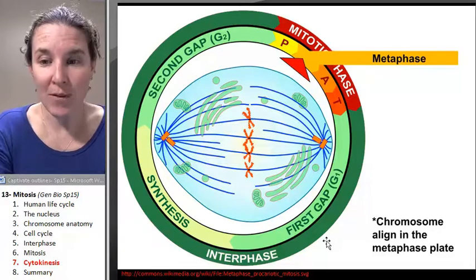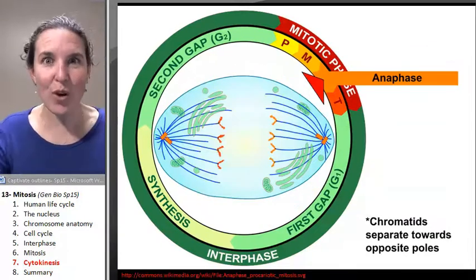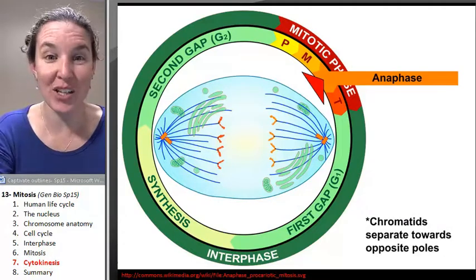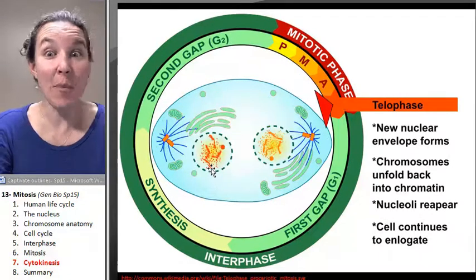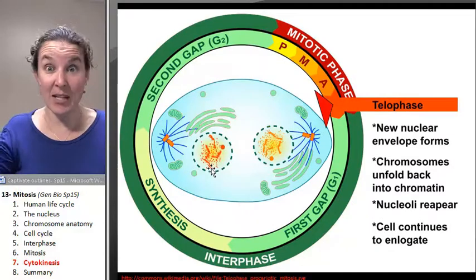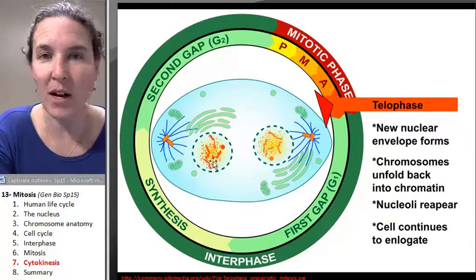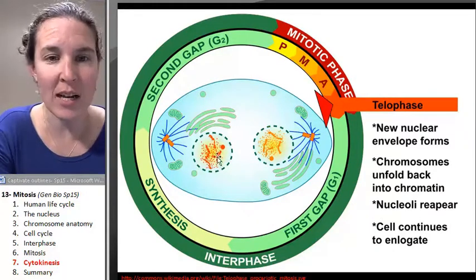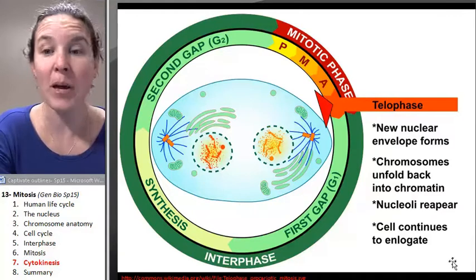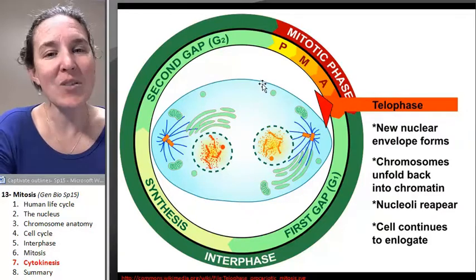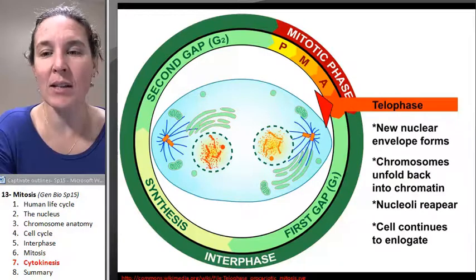In anaphase, we're going to pull those sister chromatids apart toward the poles. Then in telophase, we start reversing the whole process. We're going to unravel our DNA and reform the nuclear envelope. And now we've got two nuclei inside one cell.